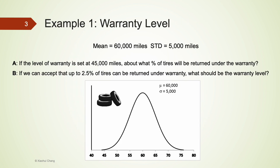Let's look at an example where the empirical rule can be applied. We have a bell curve representing tire mileage, which follows a normal distribution with a center of 60,000 and a standard deviation of 5,000. The first question: if the warranty level is set at 45,000 miles, what percentage of tires will be returned under warranty?